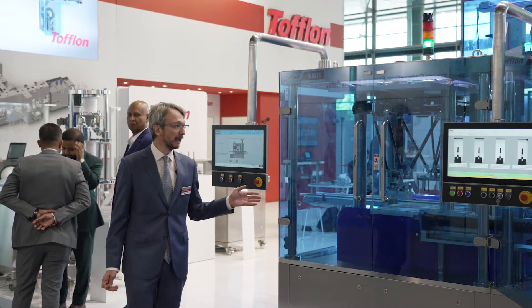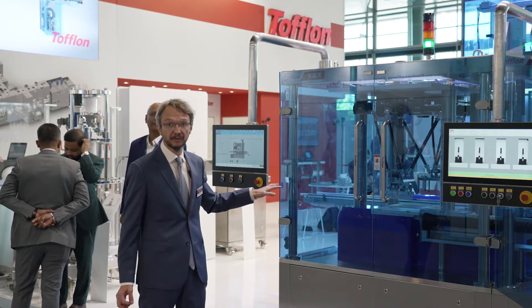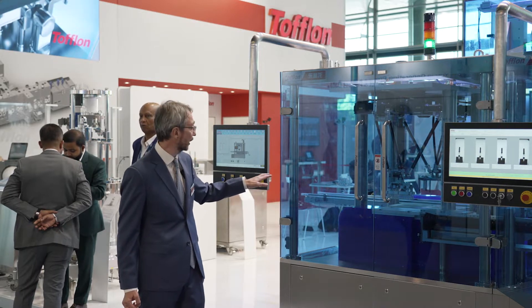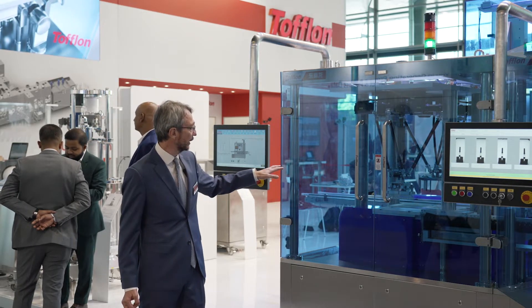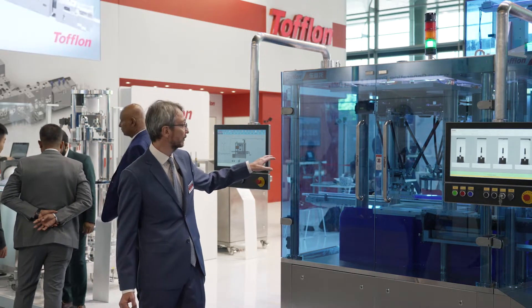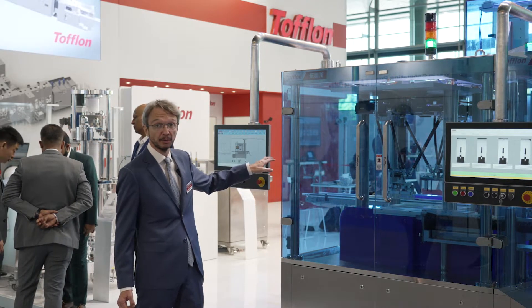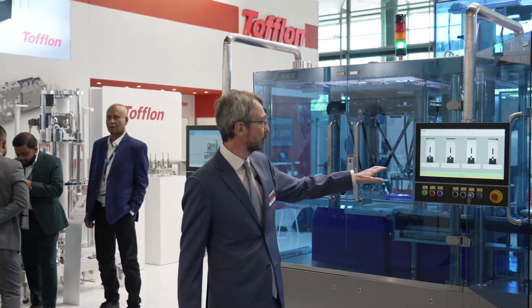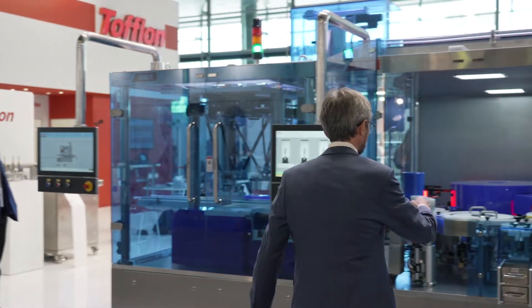This machine is made mainly by three big sections. The first section is the denesting area where the nest brings the containers to inspect in. They are removed from the nest automatically by two robots. Then the syringes are fed to the visual inspection area, here the main carousel.